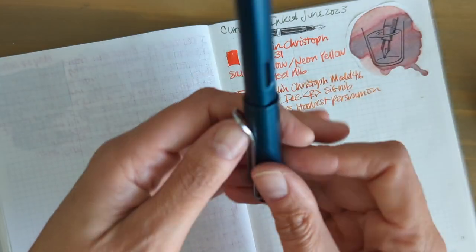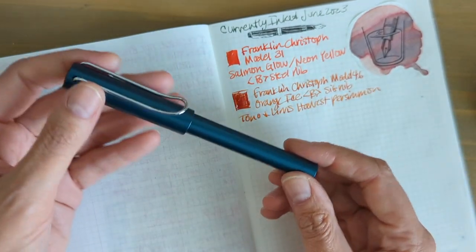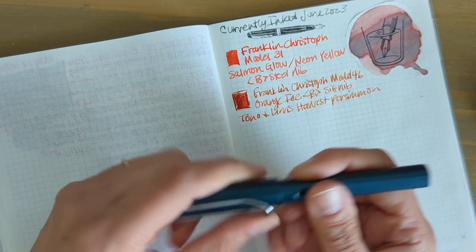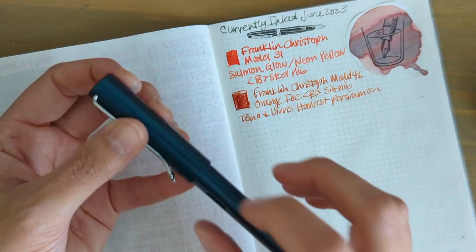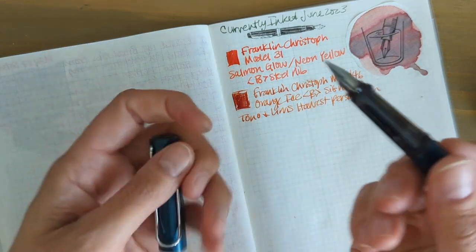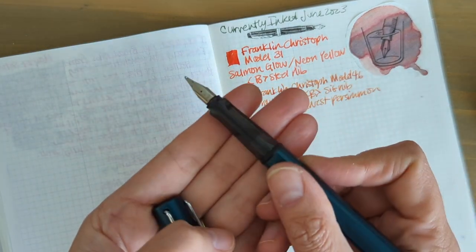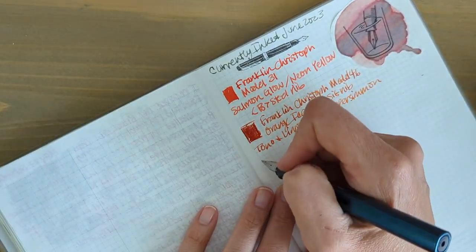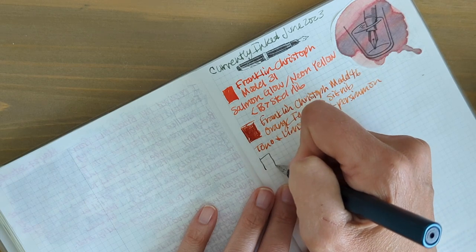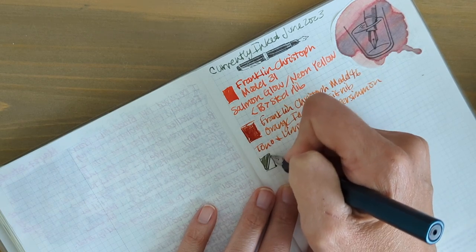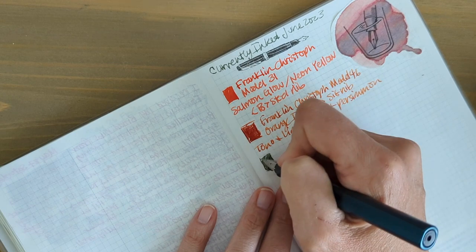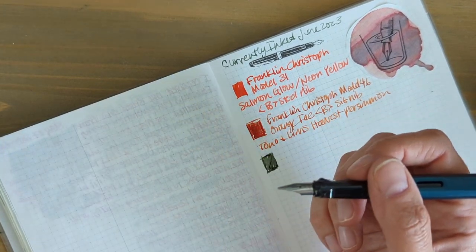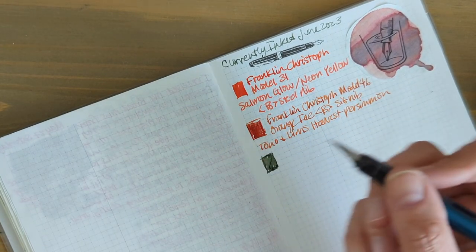Another newish pen that I recently picked up is the Lamy All-Star in petrol. So this is the aluminum bodied Lamy and I got it in a broad nib. Big surprise. And I love this pen so much. It's really great. I like the weight of it much better than I did when I had the Lamy Safari.